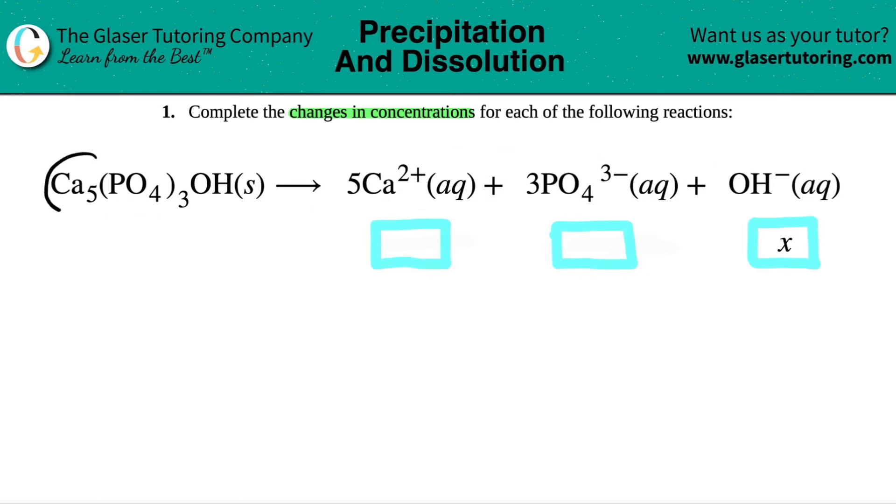So we have Ca5(PO4)3OH, that's a solid, but when that dissociates, it yields into its three ions.